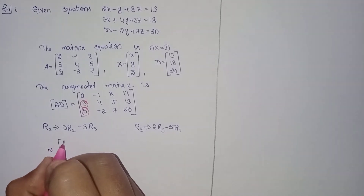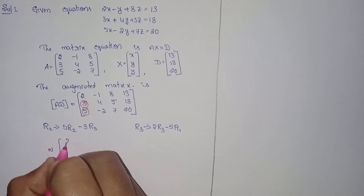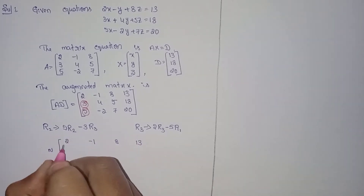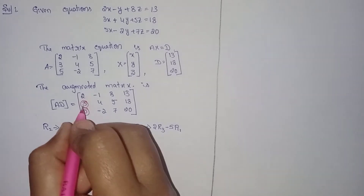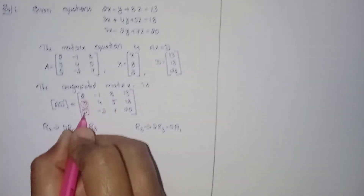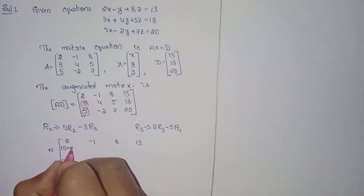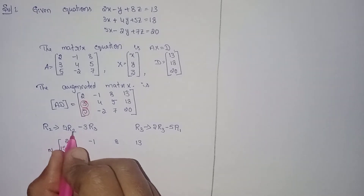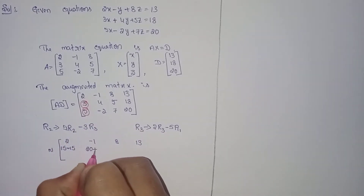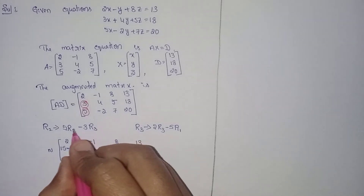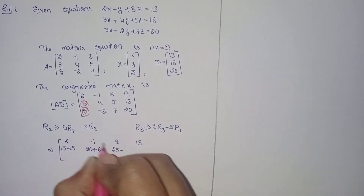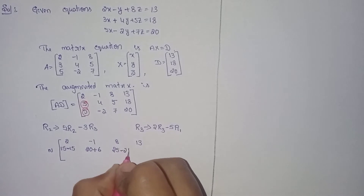Computing the new R2: 5 times R2 gives 15, 20, 25; minus 3 times R3 gives 15, -6, 21. For R3: 2 times R3 minus 5 times R1, working through the z and constant terms: 2×7=14 minus 5×8=40, and 2×20=40 minus 5×13=65.